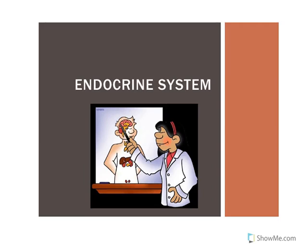This recording is going to cover specifically growth hormone, which is a hormone secreted by the anterior pituitary gland. As a quick review from previous recordings, we looked at the hypothalamus and the pituitary gland, which produced a whole bunch of different hormones. Growth hormone was one of them. I want to tie in something I mentioned previously about tropic hormones.